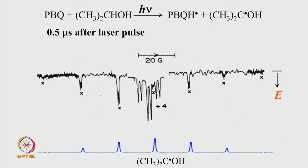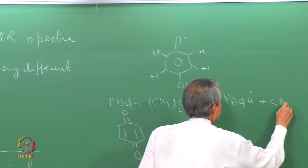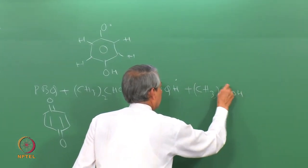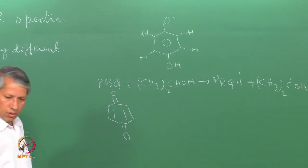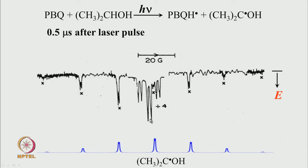Now in the time-resolved experiment, the spectrum recorded 0.5 microseconds after the laser pulse shows lines marked with a symbol matching the spectrum of the (CH3)2COH radical. There is also a doublet here, and one could believe the partner radical must be present. So the time-resolved spectrum shows that the other radical — the semiquinone — is also present. The steady-state spectrum did not show this; here there are three doublets corresponding to this radical.